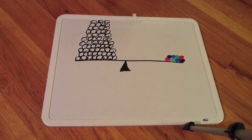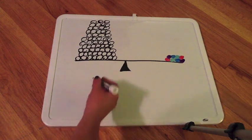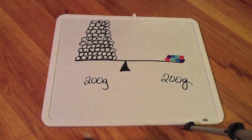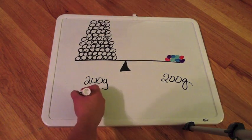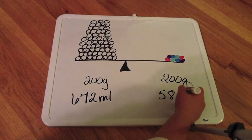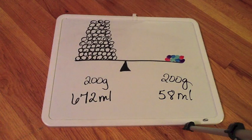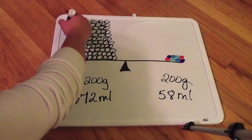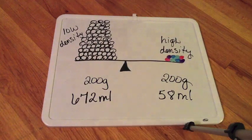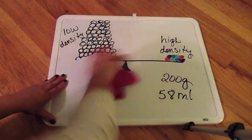Okay, so on one side of my scale teeter totter I have about 200 grams of cotton balls and then 200 grams of gumballs. Now you can see that the pile of cotton balls is really big, so we're going to say it's about 672 milliliters, whereas the gumballs is only 58 milliliters. So the cotton balls again have low density while the gumballs have high density. If the masses are equal, high volume means low density. So kind of the opposite of the last example.